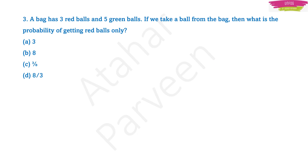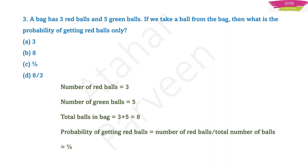In this type of question, no need to see the options first because you have to solve it. Unless you solve this problem you will not get the correct answer. Number of red balls is 3, number of green balls is 5, so total number of balls in the bag is 8 (3 + 5). The probability of getting red balls only is number of red balls divided by total number of balls, which gives 3/8.